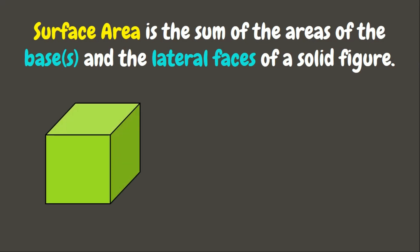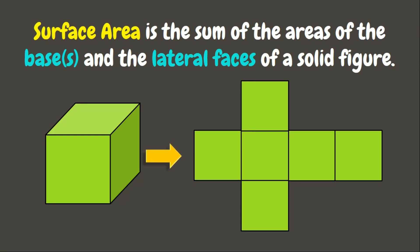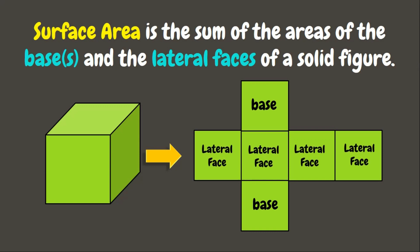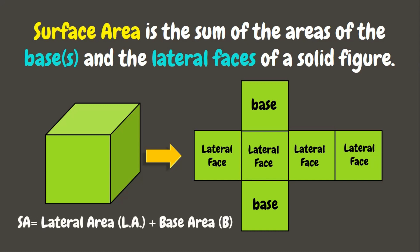For example, we have here a cube. If we unfold this, we will get its net — the pattern of the figure. Here we can see that the top and the bottom part of the figure are what we call the bases, while the rest of the faces are called the lateral faces. To solve for the surface area, we simply need to add all the lateral face areas and the areas of the bases.